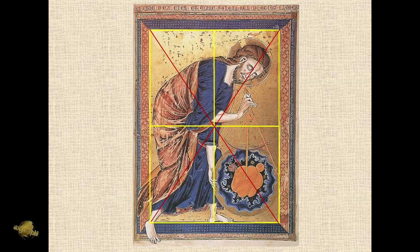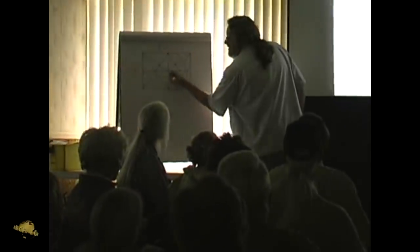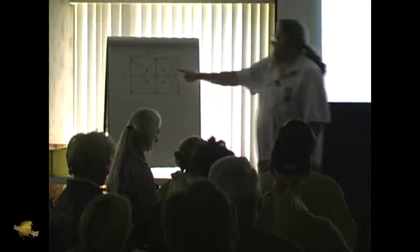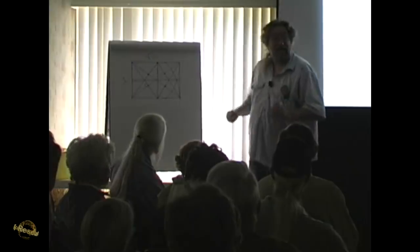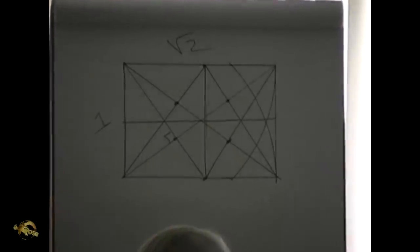You can nonetheless see that certain key elements of the composition are actually positioned according to those points within that root two rectangle — the power points, if you will. Those power points are where you find, for example, there's a point, there's a point, there's a point, and there's a point. Those four points actually create another rectangle of the same proportions within. So there are certain key points within each of these.